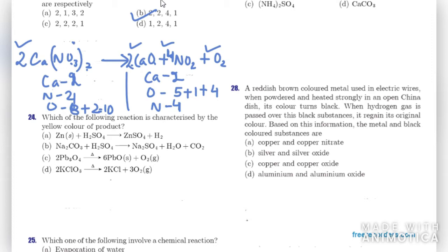Question twenty-four: which of the following reactions is characterized by a yellow-colored product? Out of all the options, lead oxide produces a yellow color. Lead oxide is initially red in color but when heated it gives off a yellow color.